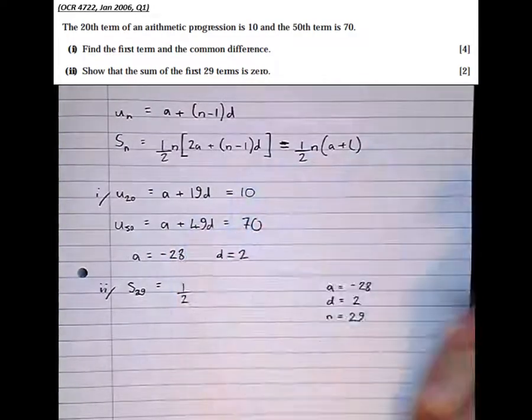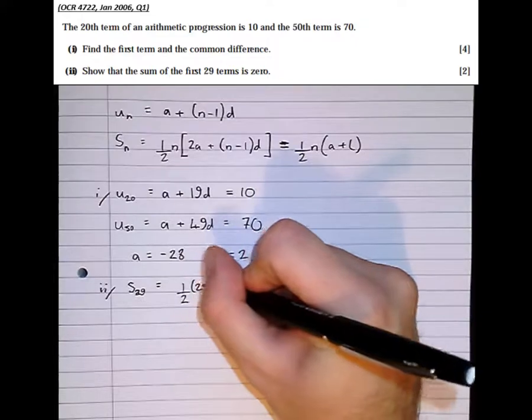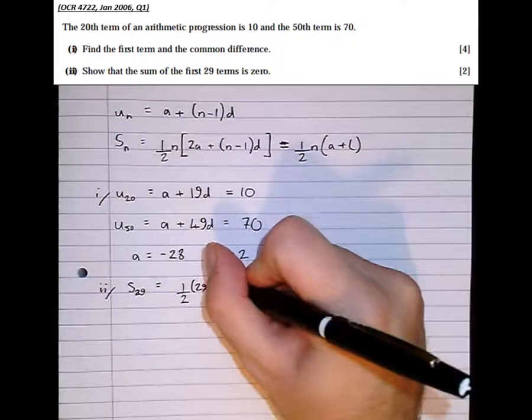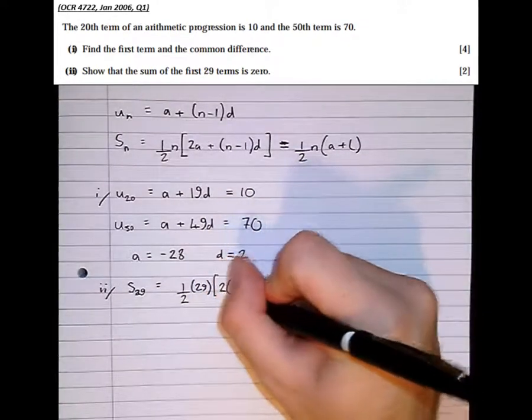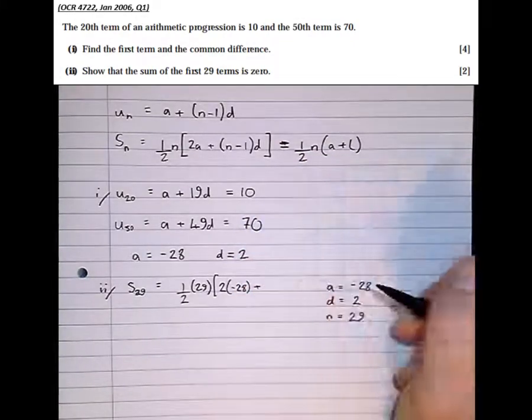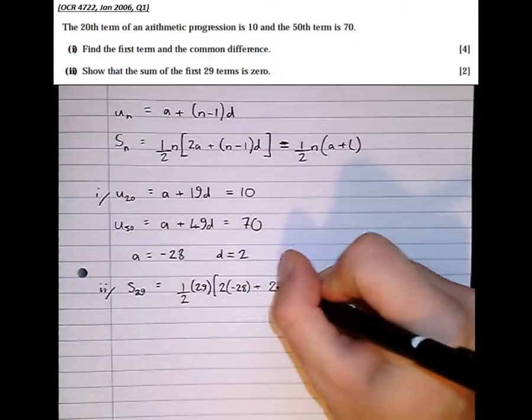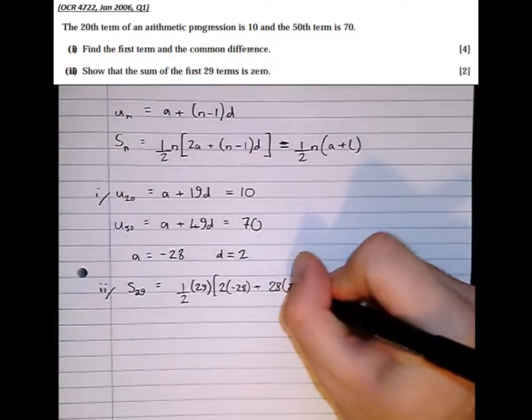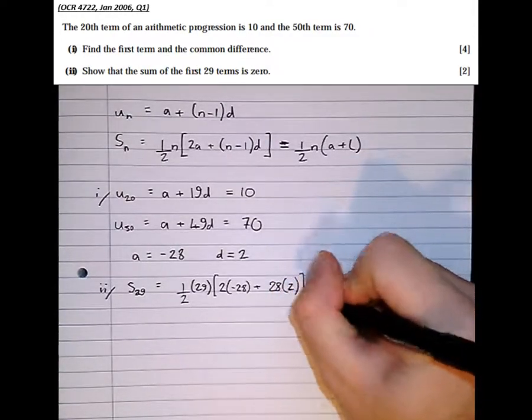1 half, 29, 1 half n, 2a, plus (n minus 1), that's 28, d.